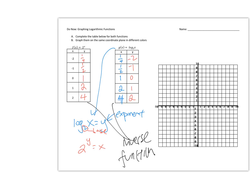Let's go ahead and graph these two functions — one in red and the other in blue. For the red one: (0,1), (1,2), (-1, 1/2), (2,4), (-2, 1/4). For the blue one: (0,1), (2,4), (4,2), (1/4, -2), (1/2, -1). Graphing these gives two distinct curves.